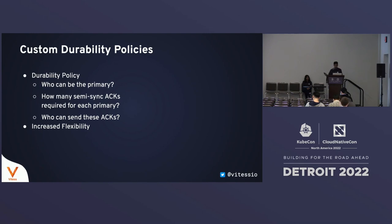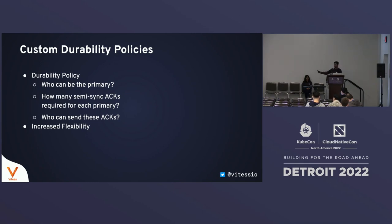The custom durability policy interface requires you to answer only three questions. First: who can be the primary? You can restrict which tablets are eligible — for example, OLAP-only tablets you don't want promoted. Second: how many semi-sync ACKs does each primary require? This can be customized per tablet — tablet A could require three ACKs while tablet B requires only one. Third: based on who the primary is, which tablets can send those ACKs? With these three questions, you can implement your own custom durability policy based on your constraints and trade-offs.